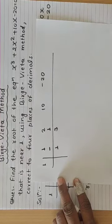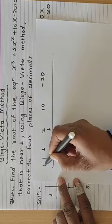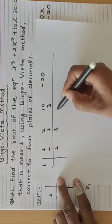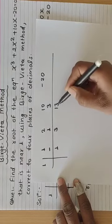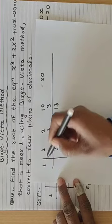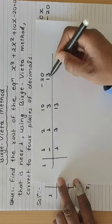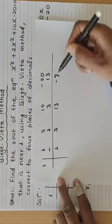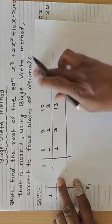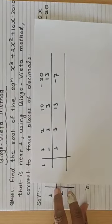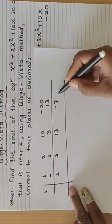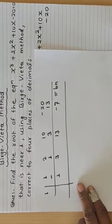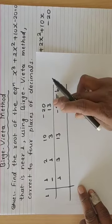After completing the synthetic division, the last value we call b_n. We perform the division and get b_n = −7.